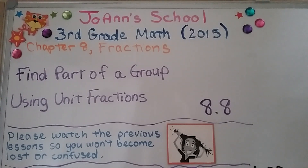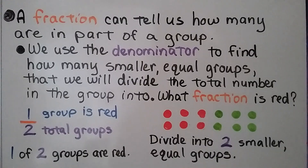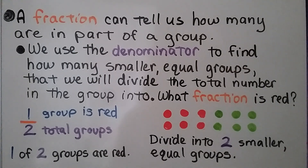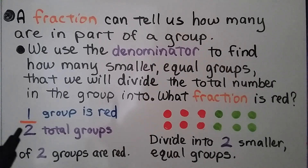Find part of a group using unit fractions. We're at lesson 8.8. A fraction can tell us how many are in a part of a group. We use the denominator to find how many smaller equal groups that will divide the total number in the group into.